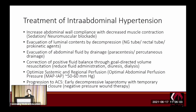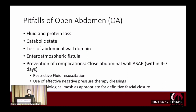Once abdominal compartment syndrome develops with evidence of organ dysfunction, it is critically important to perform an early decompressive laparotomy. The abdomen is kept open to decompress the intra-abdominal pressure. There are costs to this procedure: it causes fluid and protein loss, puts the body in a catabolic state, and the longer the abdomen remains open, the more abdominal wall domain is lost and the greater the risk of creating an enterocutaneous or enteroatmospheric fistula.